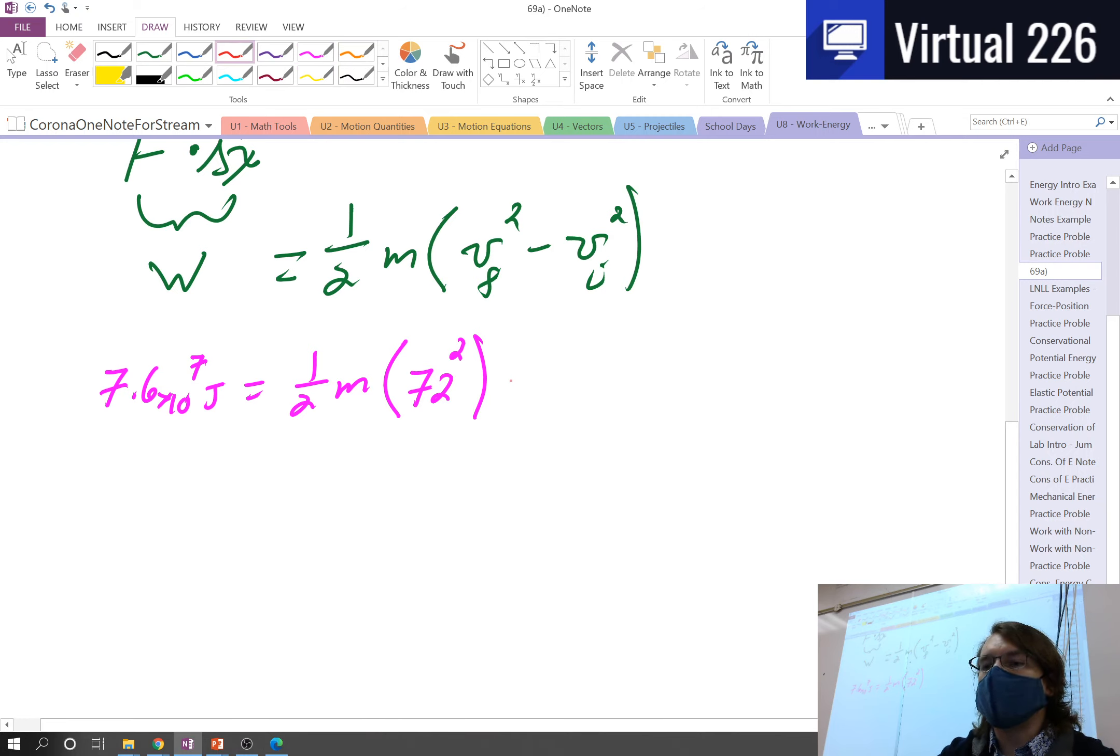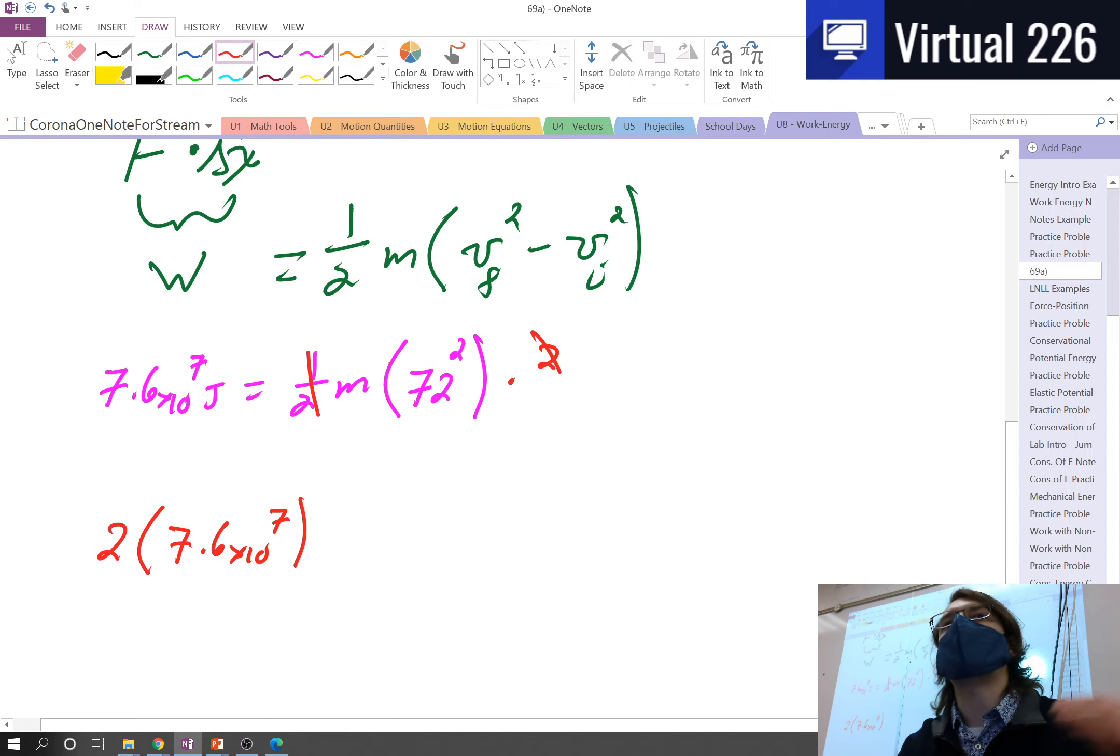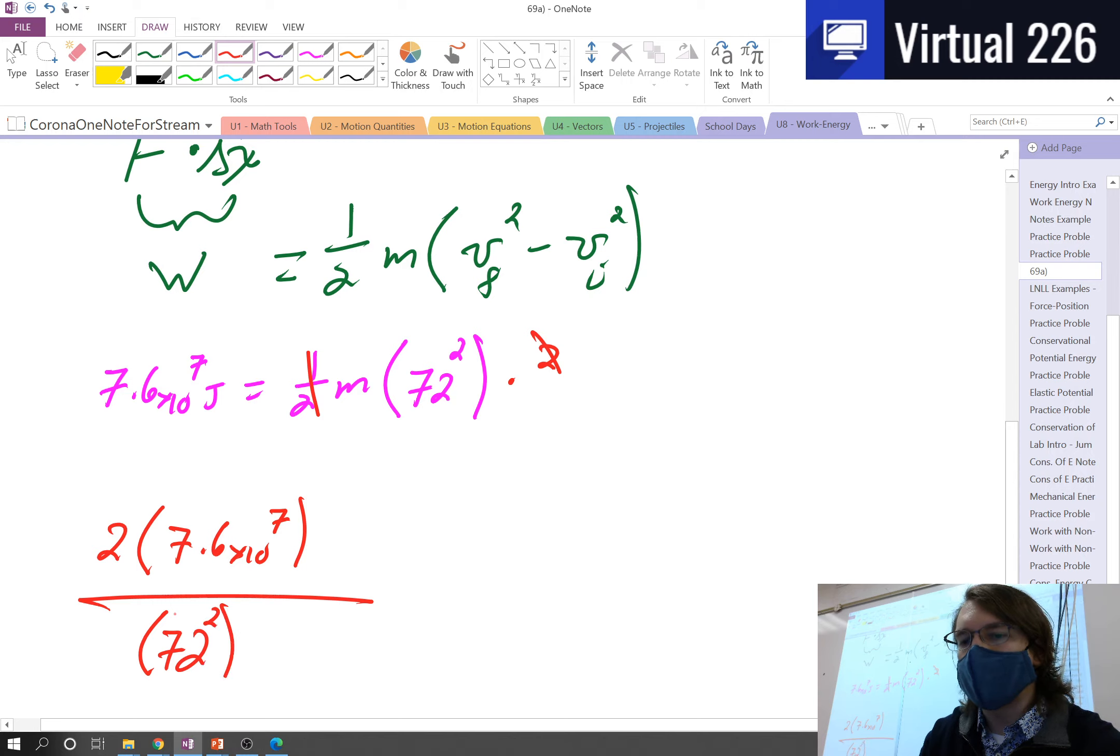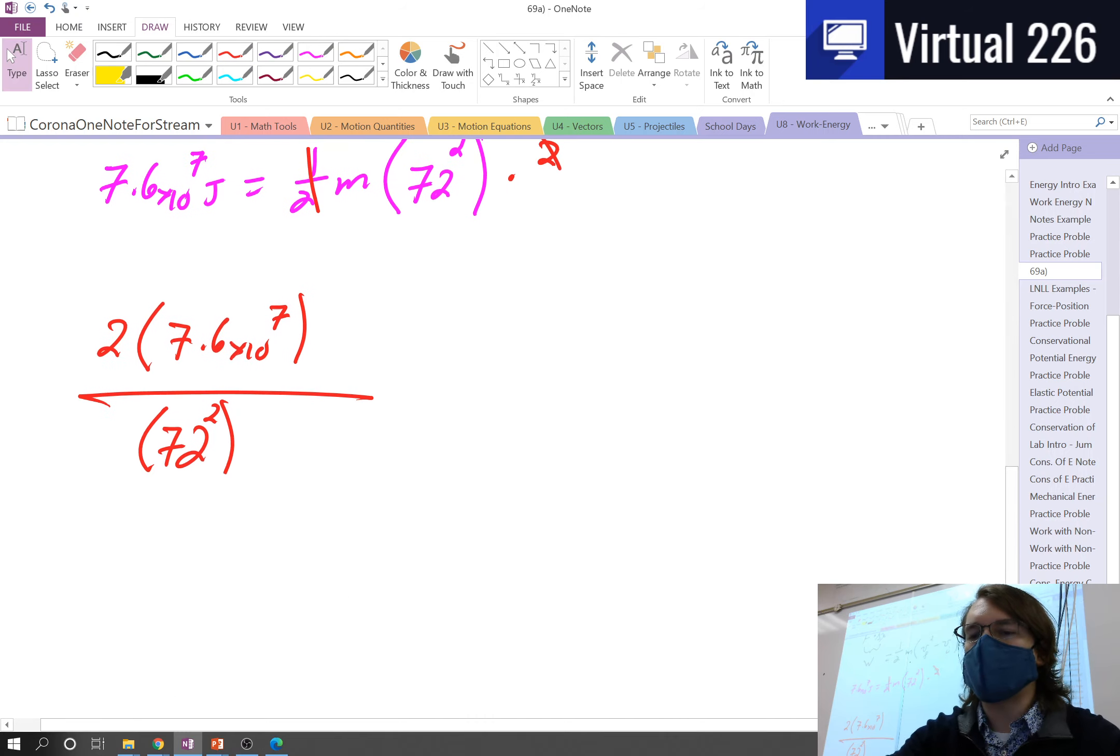We just need to solve for m. We can multiply 2 on each side to get rid of the 1 half. So we've got 2 times 7.6 times 10 to the 7th, and then now we need to divide by the 72 squared. And remember, we're dividing by 72 squared. You can either square the 72 first, get a giant number and then divide by it, or when we divide, we'd write 72 squared. And we want to be very careful when we enter that into our calculator that we're not accidentally squaring something else. Those are all little math mistakes people make. We want to make sure we don't fall into those holes.